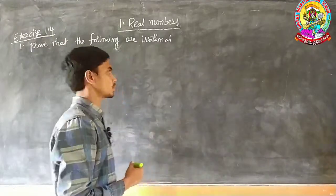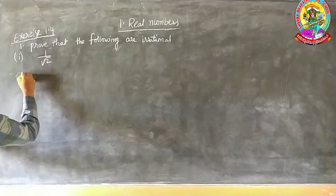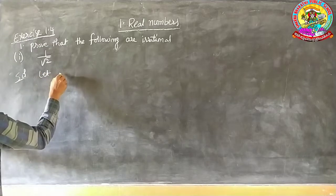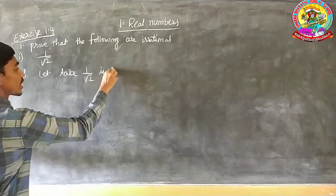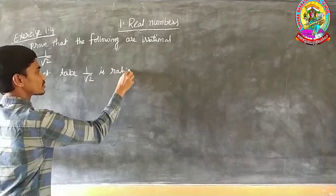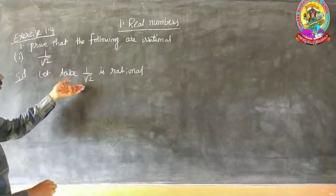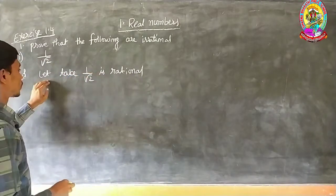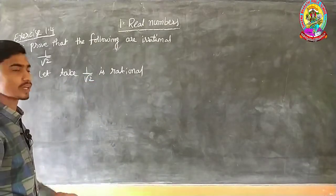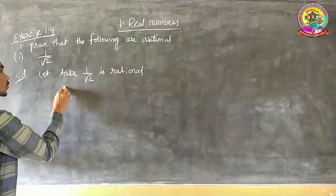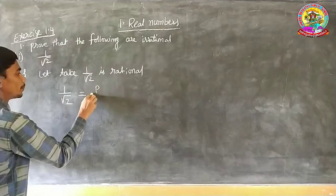The question is: prove that the following are irrationals. The first one is 1 by root 2. Let us assume 1 by root 2 is rational. Already you know root 2 is an irrational number, so 1 by root 2 should be irrational. But we are assuming that 1 by root 2 is a rational number — let us see what will happen. If 1 by root 2 is a rational number, then it is possible to express it in the form of P by Q.